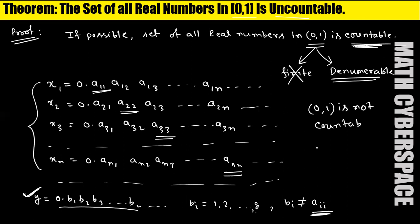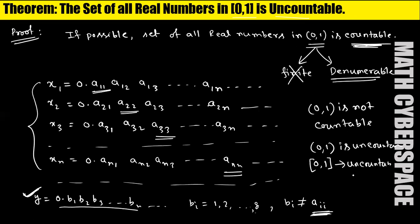Therefore the open interval (0,1) is uncountable. Adding the boundary points 0 and 1, the closed interval [0,1] is also uncountable. If you have any doubts, please comment below. Thank you.